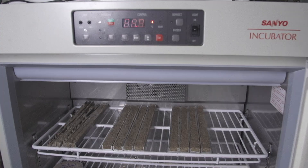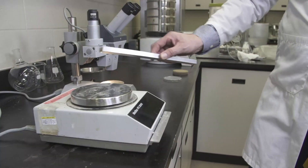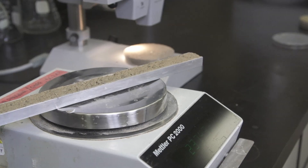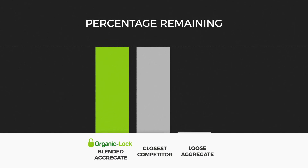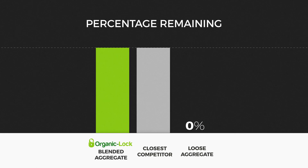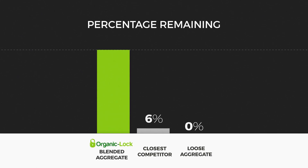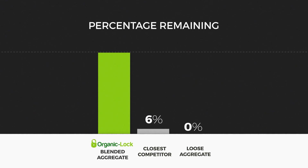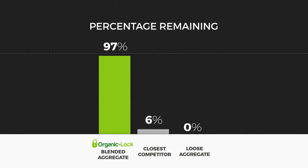Once the rainfall simulation was complete, the samples were dried, weighed, and the amount of material lost during simulation was calculated and recorded. The loose aggregate showed 0% retained, the closest competitor 6%, whereas the Organic Lock blended aggregate proved to be 97% effective.